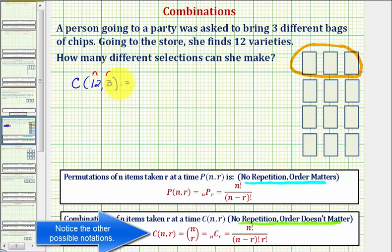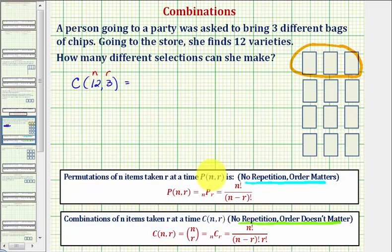So to evaluate this by hand, we would have N factorial, which is twelve factorial, divided by N minus R factorial, that would be twelve minus three factorial, times R factorial, which is three factorial.